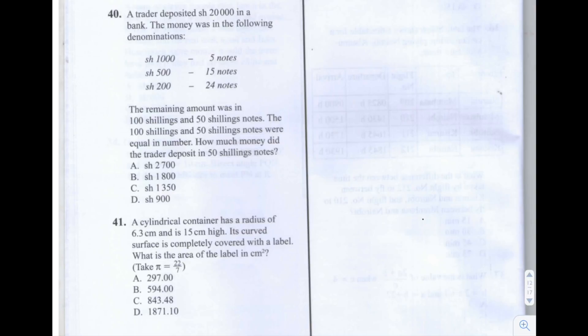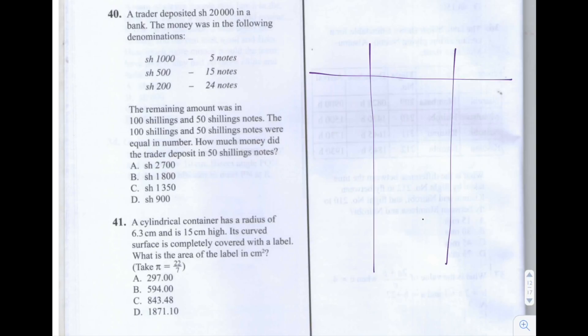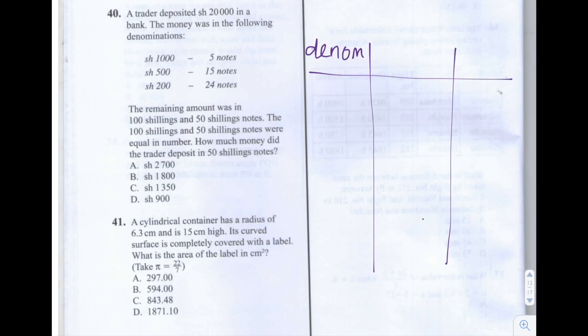I'm going to write this out in a table form so that we can see exactly what's going on in this question. I'm going to have a table with three columns: one column for the denomination of the note, the next column for the number of notes, and the third column for the total value of the notes in that denomination.